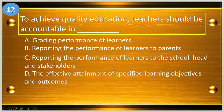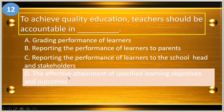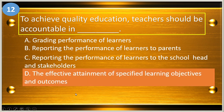Number twelve: to achieve quality education, teachers should be accountable in — A, grading performance of learners; B, reporting performance to parents; C, reporting performance to the school head and stakeholders; and D, the effective attainment of specified learning objectives and outcomes. The answer is letter D, effective attainment of specified learning objectives and outcomes.